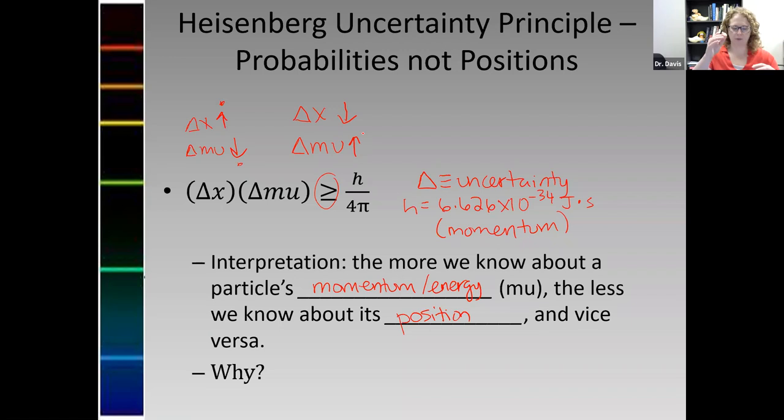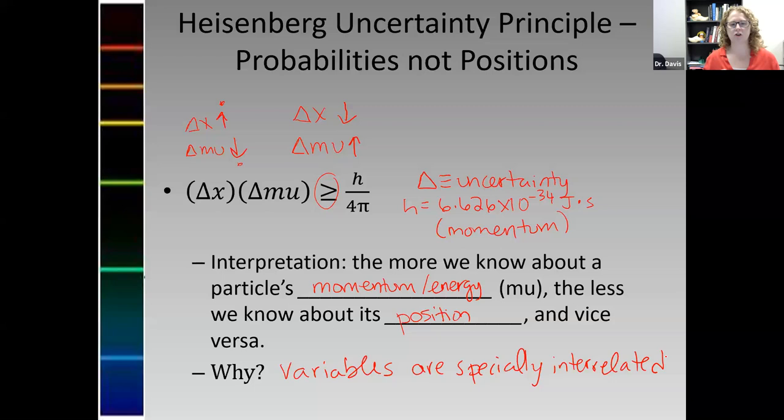Why? The variables are what we'll call specially interrelated. I'm sorry, I can't be more specific than that. There's actually some pretty deep calculus and statistics that are underneath that. But just know that certain variables in quantum mechanics are tied together like this. It's irrevocable. Momentum and position are one pair like that. The more I know about one, the less I know about the other.